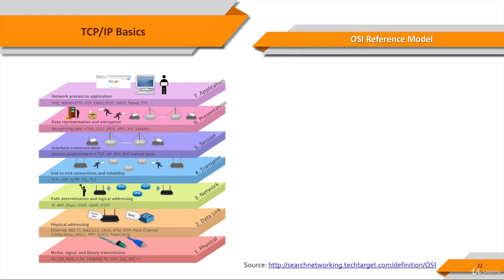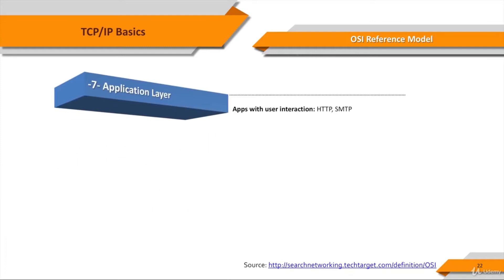The seven OSI layers are: Layer 7, the application layer. This is the layer at which communication partners are identified — is there someone to talk to? Network capacity is assessed — will the network let me talk to them right now? And it creates or opens the thing received. Please note that this layer is not the application itself; it is the set of services an application should be able to make use of directly, although some applications may perform application layer functions.